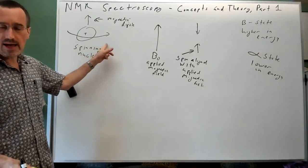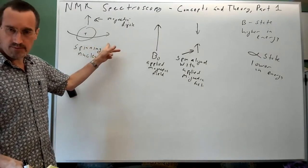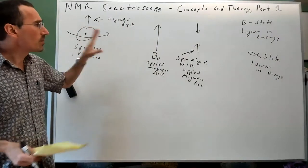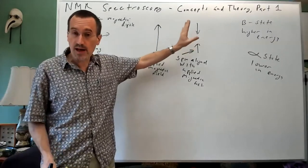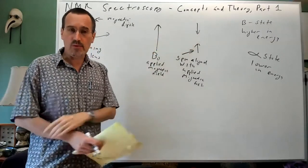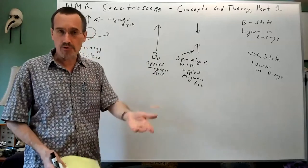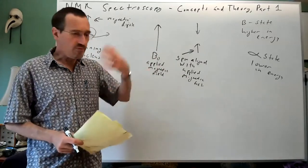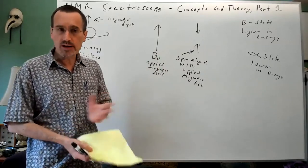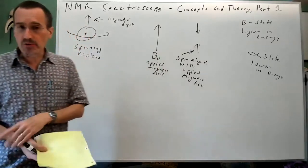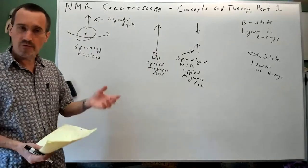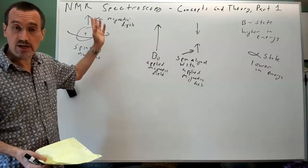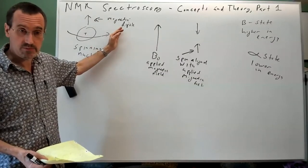This basic principle gives us the starting point for thinking about NMR spectroscopy. Not all nuclei have a nuclear spin. In some cases we will have more than two states, but not for common nuclei like proton or carbon-13. Some nuclei, like carbon-12, have no nuclear spin.